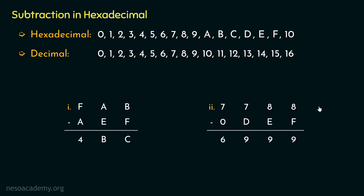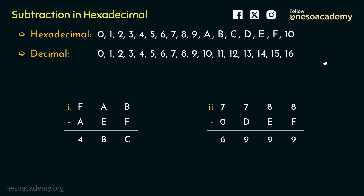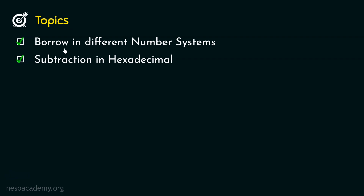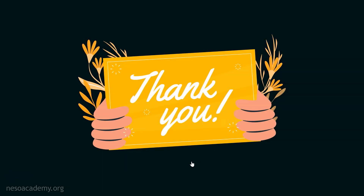And this is how we perform subtraction in hexadecimal. Whenever we borrow in hexadecimal, we borrow 10 — the decimal equivalent is 16 — just like in binary we borrow 10 but the decimal equivalent is 2. In this session, we covered borrowing in different number systems and subtraction in hexadecimal. In the next session, we will learn about hexadecimal subtraction using 15th and 16th complement techniques. Thank you all for watching.